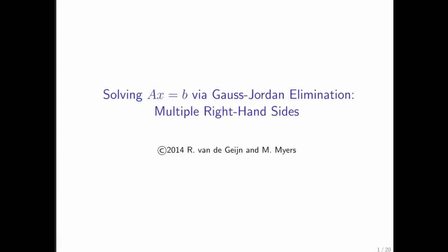So we've looked at how Gauss-Jordan elimination can be used to solve a linear system with one right-hand side. Now we're going to move on and show how we can actually simultaneously solve with a number of right-hand sides at the same time.